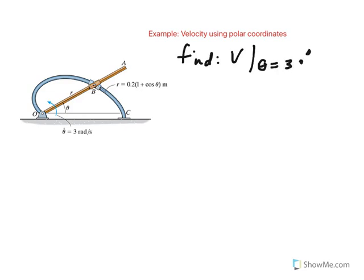What's given in this problem is how the motion of this collar along this curved path OC is given by this position vector r, which is changing according to that equation: 0.2 times 1 plus cosine theta, in meters. Also at this instant when theta equals 30 degrees, we are told that theta dot, which is the rate of change of angle theta or angular velocity, is three radians per second. Our objective is to find velocity at this instant.